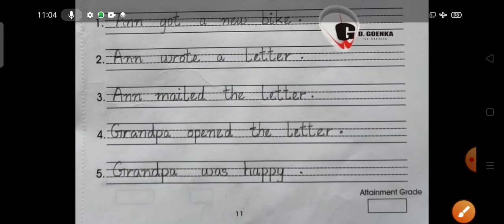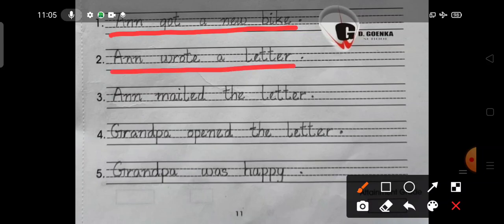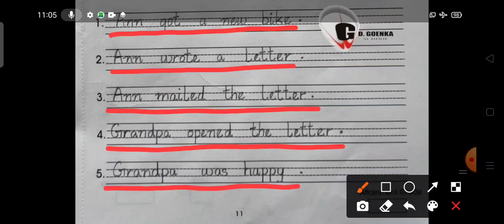Now let us write these sentences on the lines below. First, Anne got a new bike. Full stop. Anne wrote a letter. Third, Anne mailed the letter. Fourth sentence, Grandpa opened the letter. Fifth sentence, Grandpa was happy.